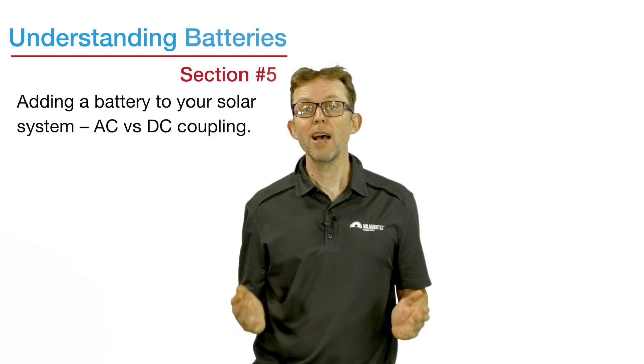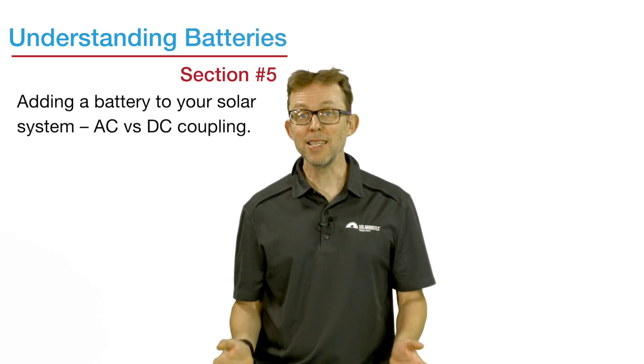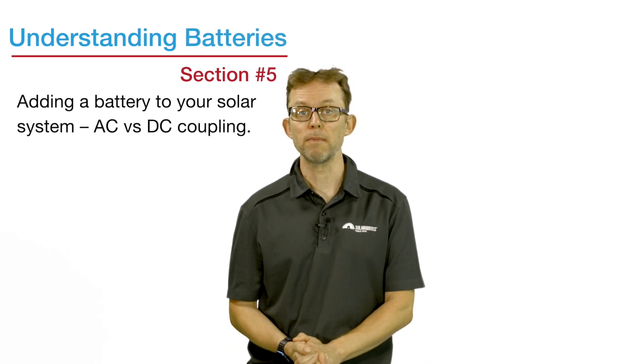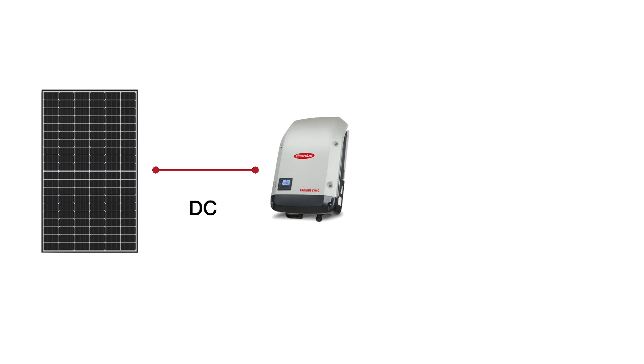Point number five. Adding a battery to your solar. AC versus DC coupling. As explained in my Solar 101 guide, solar panels output DC electricity. But the appliances in your home use AC electricity. The job of a solar inverter is to convert the DC from the panels into AC used in your home. Batteries charge and discharge DC electricity. So how do you integrate a battery into a solar system? Well, there are two ways.